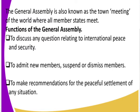Another function of the General Assembly is to admit new members, suspend, and also dismiss members. If a certain country wants to join the UN, it is the General Assembly that admits them. If a member state has violated the principles or obligations of the United Nations, the General Assembly can suspend or dismiss them. The General Assembly also makes recommendations for the peaceful settlement of any situation.